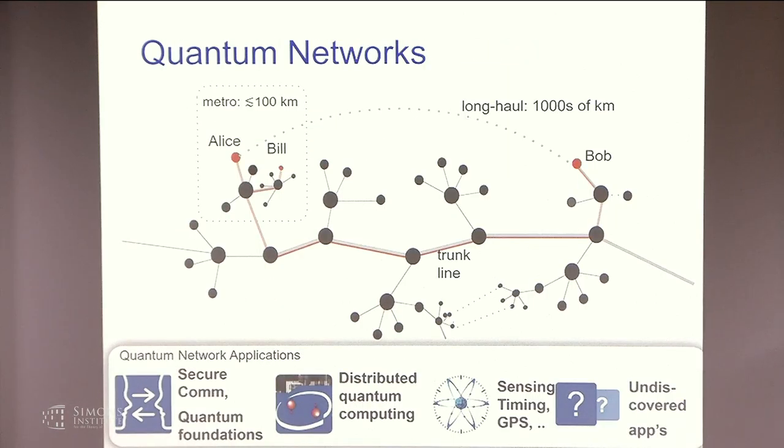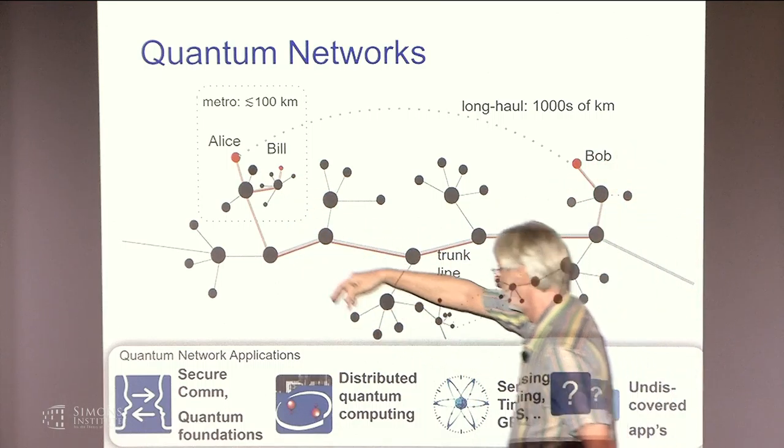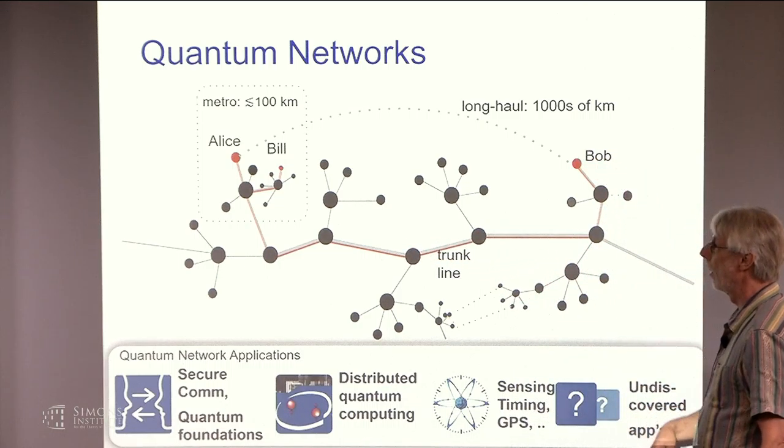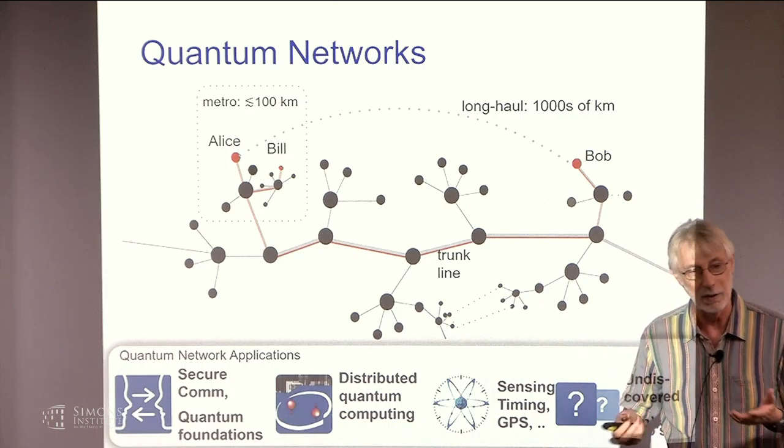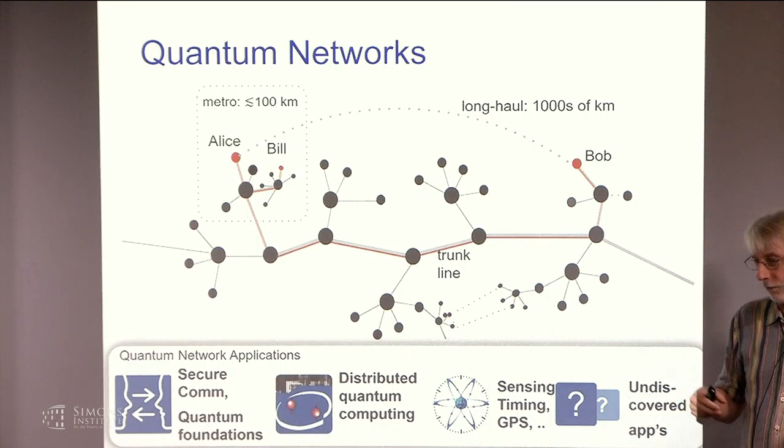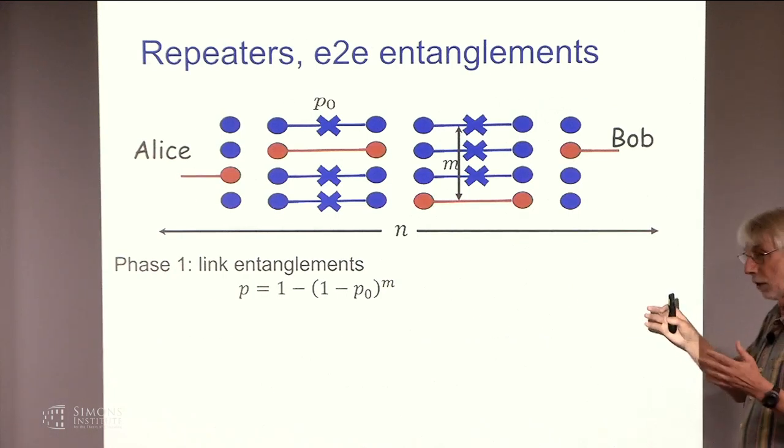And so what that suggests is what we would like then is some kind of a quantum network that would allow us to be able to do that. Where we have Alice, we have Bob, there's some path to Bob and that they would somehow be able to generate an end to end entanglement between them. And if we could do that, then that would essentially allow lots of different applications of secure communications, as was alluded to by Daria, distributed quantum computing. That's becoming really very much of interest because companies are now being able to build small quantum computers. But if they really wanted to have many, many qubits available to them at this point and probably for many years, they'd have to be able to connect lots of them. And there, of course, are undoubtedly lots of applications yet to be done.